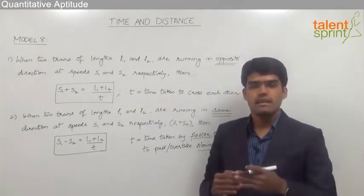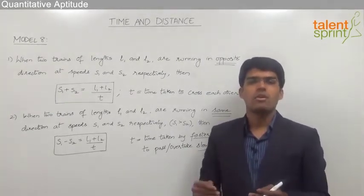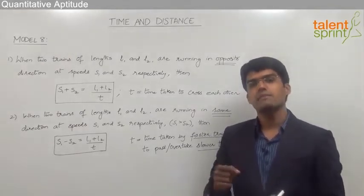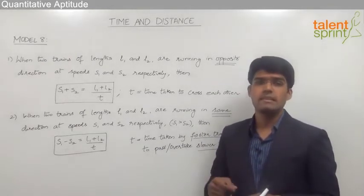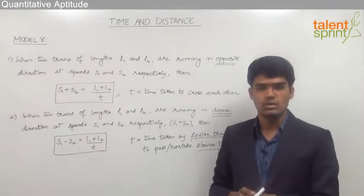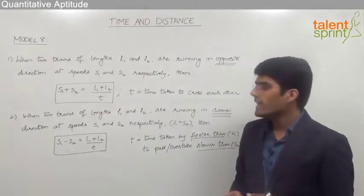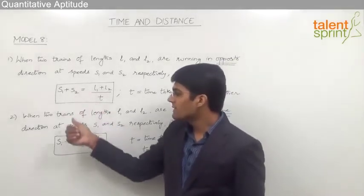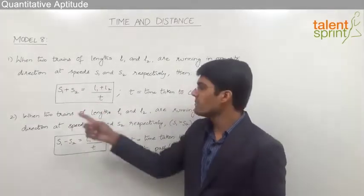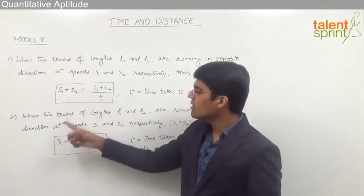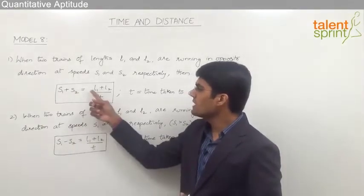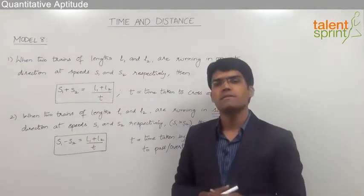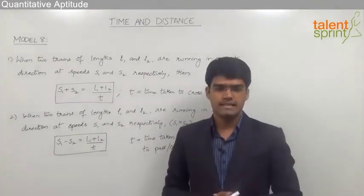In some special cases a moving train may have to cross a train which is stationary. In that case we assume the length of the moving train is L1 and the length of the stationary train is L2. The equation to be used is still one of the two, because the speed of the second train is zero. So we simply use S1 plus zero or S1 minus zero equals L1 plus L2 by T, and substitute the values accordingly to get the answer.